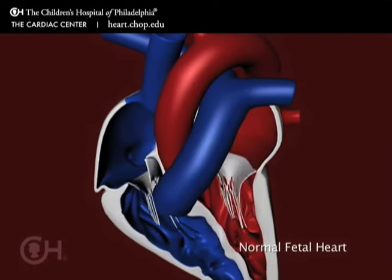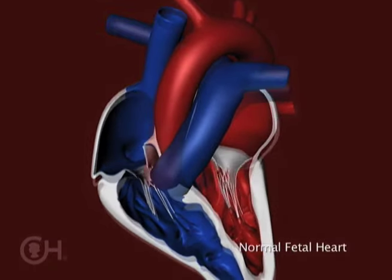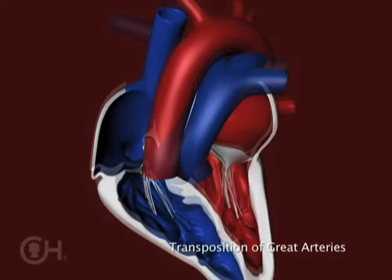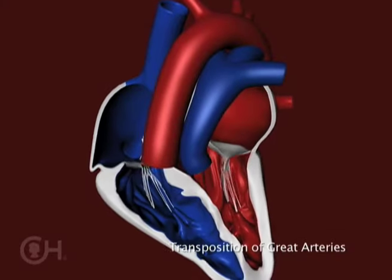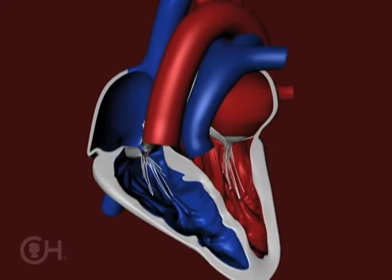In transposition, the pulmonary artery and the aorta are switched — they are transposed. So they come off the opposite pumping chamber.